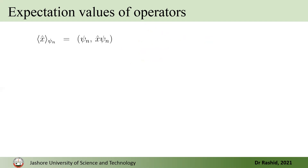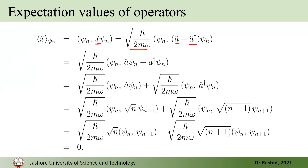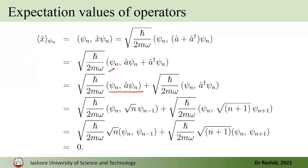We know that the position operator x-hat can be written in terms of a and a-dagger. So we write that expression with a multiplication factor containing a and a-dagger. We distribute this and multiply χ_n with both terms to get the inner product ⟨χ_n|x̂|χ_n⟩ split into two terms — one involving ⟨χ_n|a|χ_n⟩ and one involving ⟨χ_n|a†|χ_n⟩.